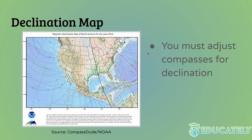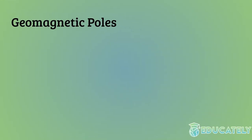This is a declination map published in the United States, showing how you have to adjust your compass at different locations, specifically for 2010. It's going to be different now because the north magnetic pole has moved since then. But in 2010, if you were in Washington state, you would have had to adjust your compass by about 15 degrees to account for declination, because you want to travel relative to where the geographic north pole is.